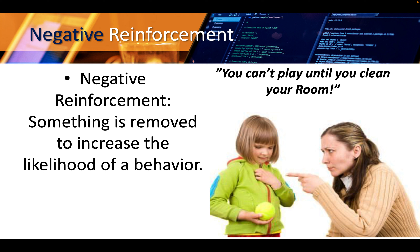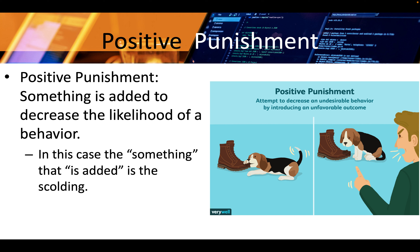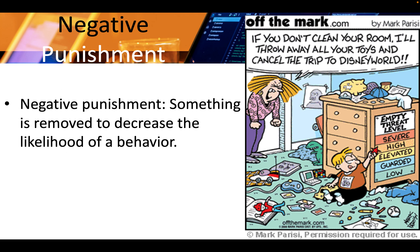Positive punishment: something is added to decrease the likelihood of a behavior — in this case the something added is a scolding, so he scolds him and now he's not going to do that behavior anymore. Negative punishment: something is removed to decrease the likelihood of a behavior — for example, 'If you don't clean your room, I'll throw away all your toys and cancel the trip to Disneyland.'